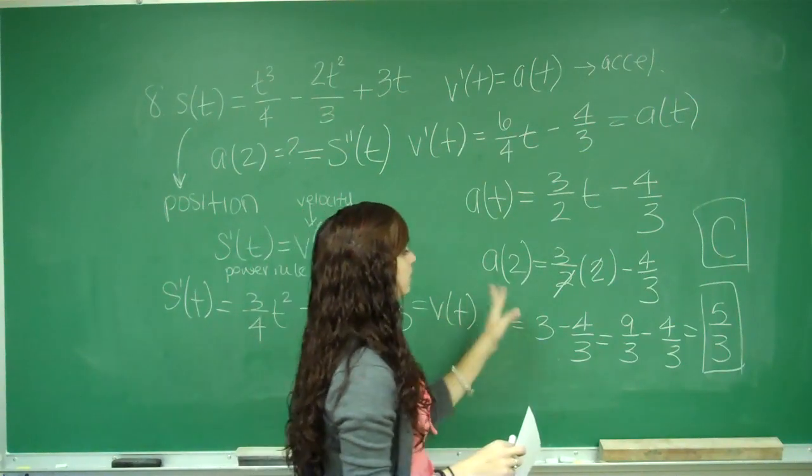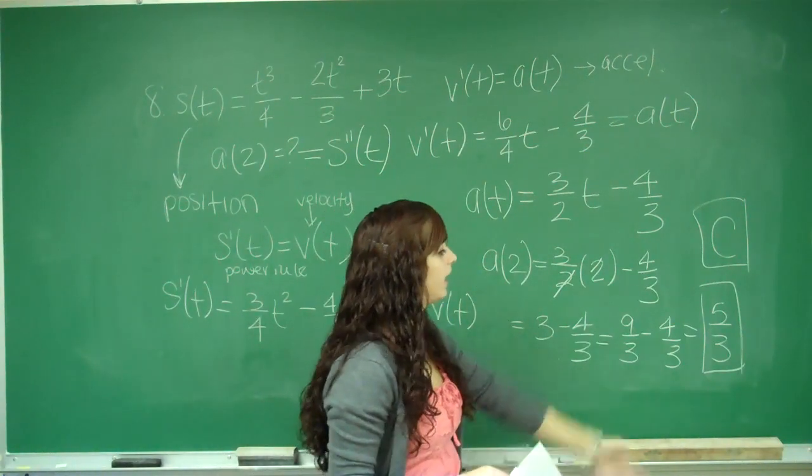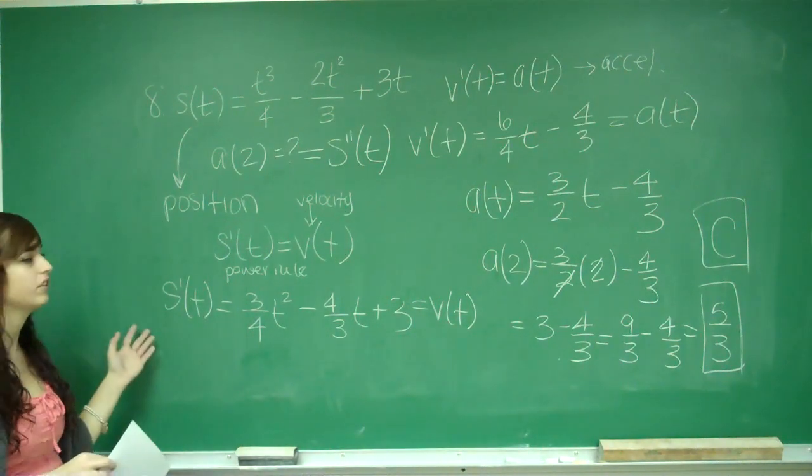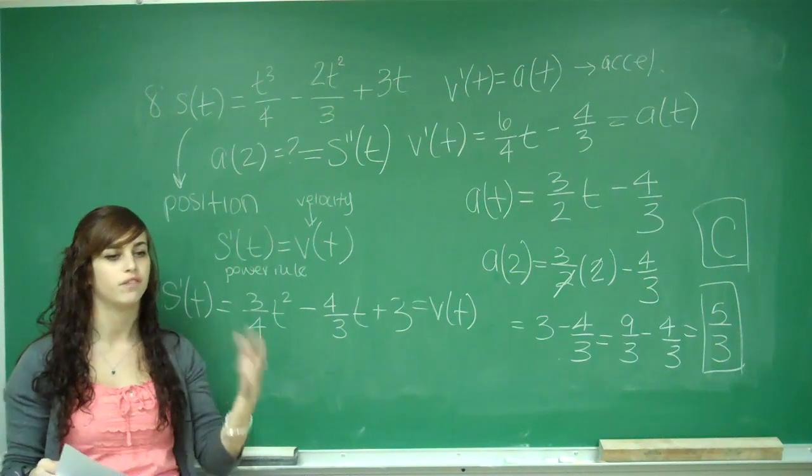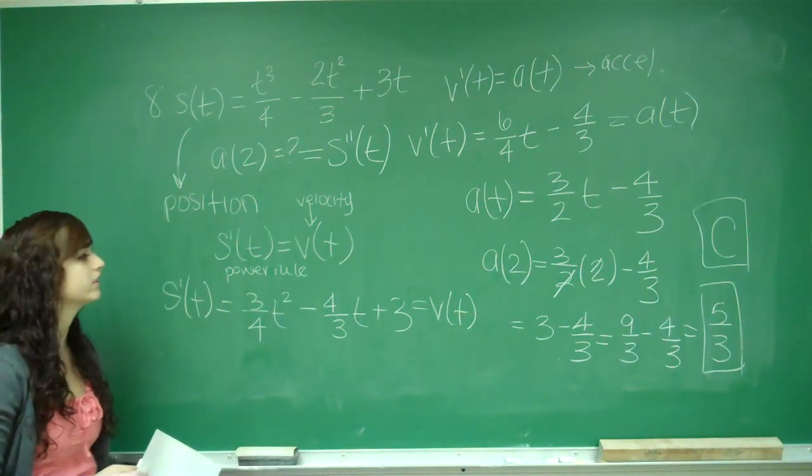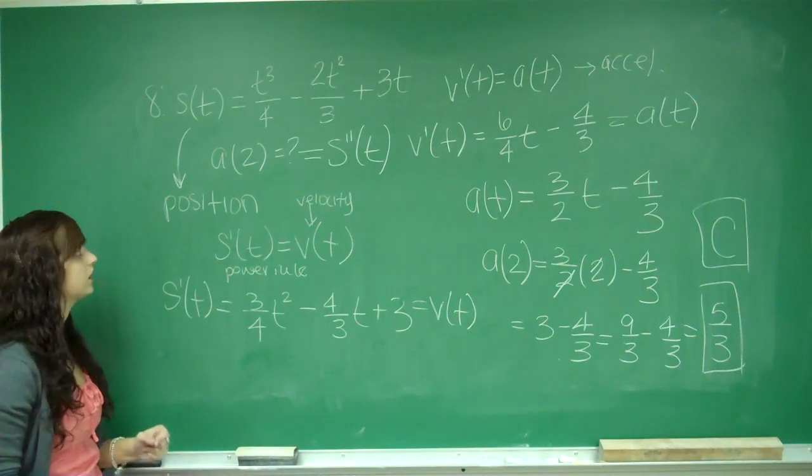They said after 2 minutes, so I plug in 2 every time I see t, and you should have a number at the end, which is your acceleration. So when they give you position and they ask for acceleration, find the derivative twice. And then if they give you a time, plug in that time to find the actual acceleration.